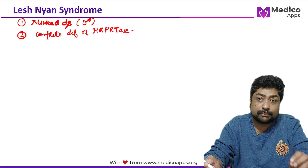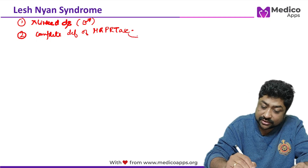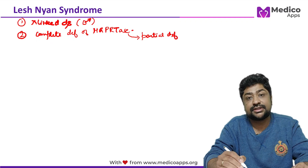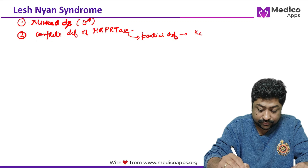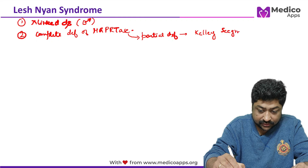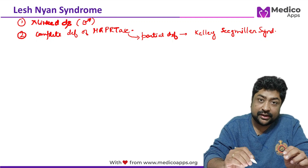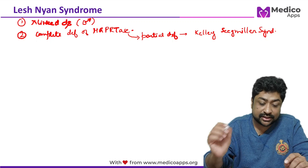Lesch-Nyhan syndrome is due to the complete deficiency of HGPRT. Another question that has been asked is: what happens with a partial deficiency of HGPRT? The correct answer is that partial deficiency causes Kelley-Seegmiller syndrome. So: complete deficiency → Lesch-Nyhan syndrome; partial deficiency → Kelley-Seegmiller syndrome.